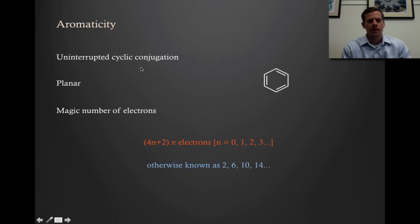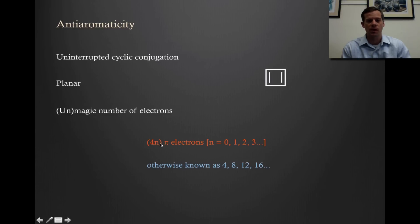So that gives us aromaticity. What we found out in the last lecture is that the opposite number of electrons, so just 4n pi electrons, actually leads to very unstable situations, something that is termed antiaromaticity.